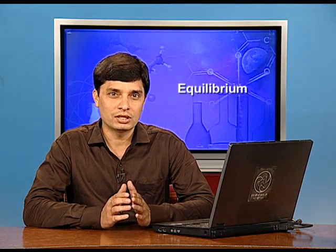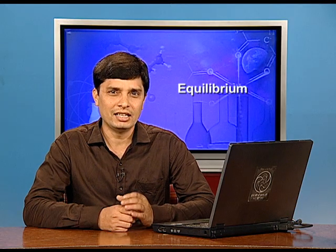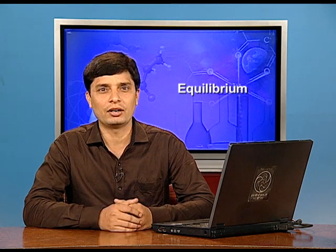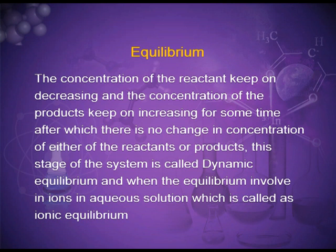If the opposing processes involve only physical change, the equilibrium is called physical equilibrium. If the opposing processes are chemical reactions, the equilibrium is called chemical equilibrium. When reactants in a closed vessel react to give products, the concentration of reactants decreases and concentration of products increases for some time, after which there is no change. This stage is called dynamic equilibrium. When equilibrium involves ions in aqueous solution, it is called ionic equilibrium.